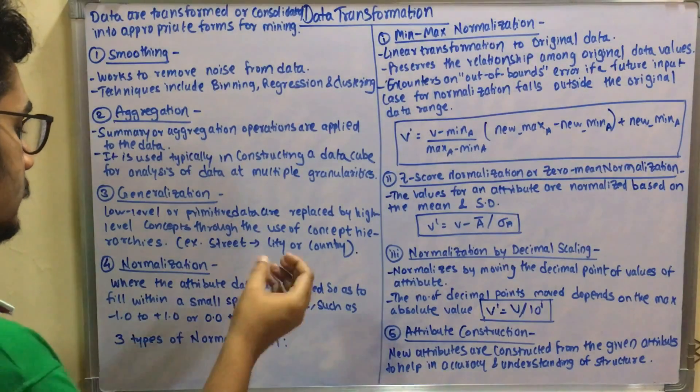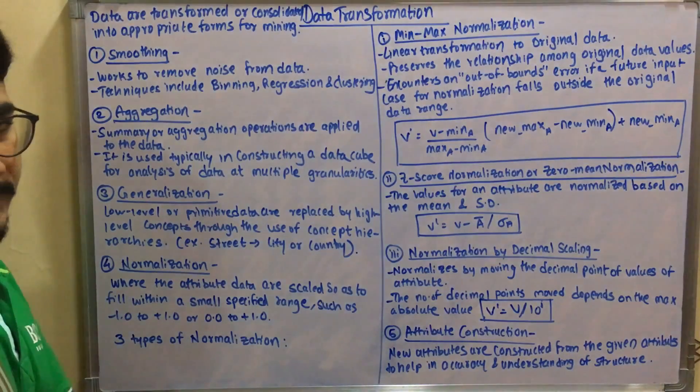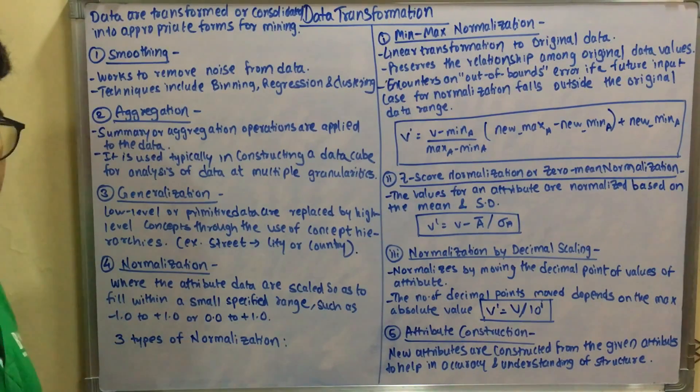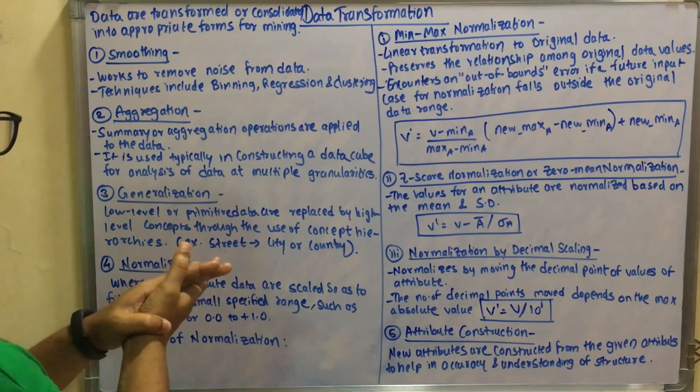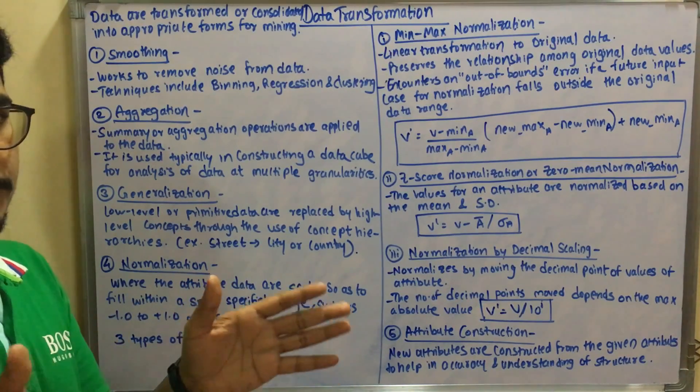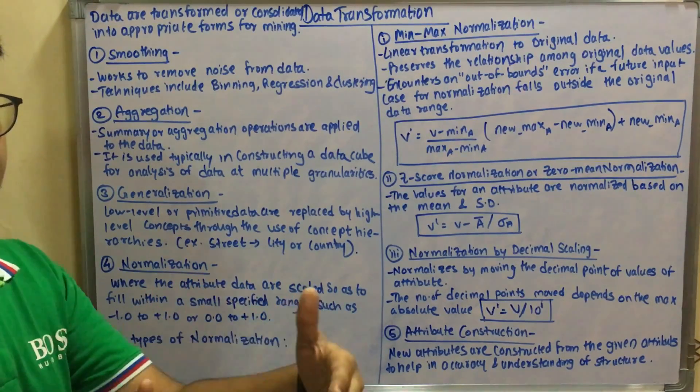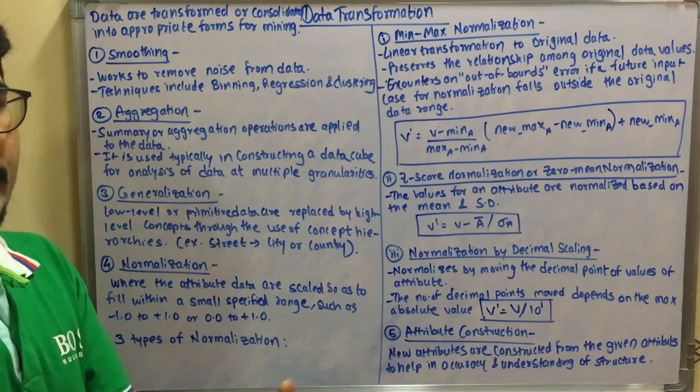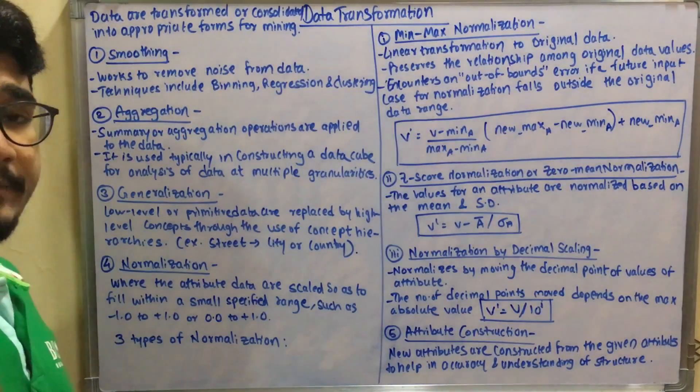Such as minus 1.0 to plus 1.0 or 0.0 to plus 1.0 from the number line. Normalization is like you are segregating or compromising that data to a particular container or to some particular extent. Then you have three types of normalizations.